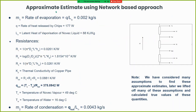We performed an approximate estimate using a network-based approach with several simplifying assumptions, verifying the neglected heat transfer processes afterward. The thermal resistance network includes R1 — convection from the inner surface of the pipe to the coolant water; R2 — conduction between the outer and inner surfaces of the pipe; and R3 — convection from Novec vapor to the outer surface of the pipe. Using this network, we found the rate of evaporation, rate of condensation, and the heat Q_out that we are able to extract.